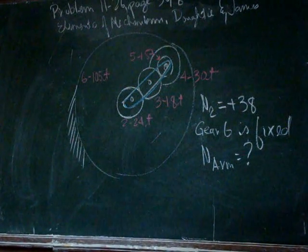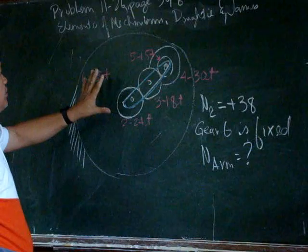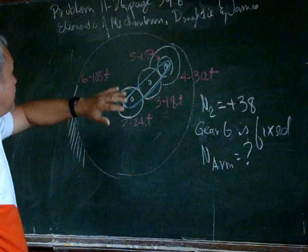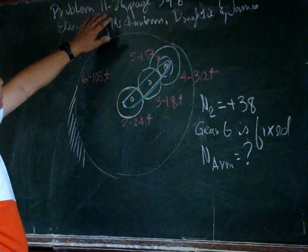This is another epicyclic train that appeared in Dothian James' book on Elements of Mechanism, page 398, problem 11-26.